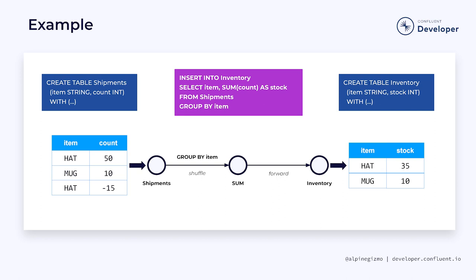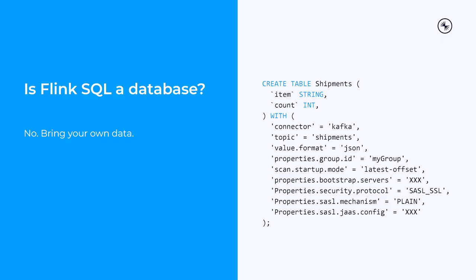Using Flink's SQL engine can feel very much like using a database, but it's not really a database. With Flink SQL, you are using standard SQL syntax to describe the processing you want Flink to do. But unlike a database, none of your data is stored in Flink. When you create a table in Flink SQL, you are describing data that lives somewhere else. In this example, the shipments table is backed by a Kafka topic. The table object Flink has is just a small piece of metadata describing the schema and the connector properties needed to deliver the data correctly to the job.